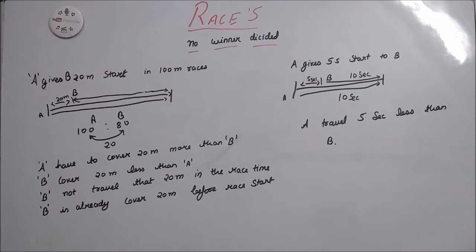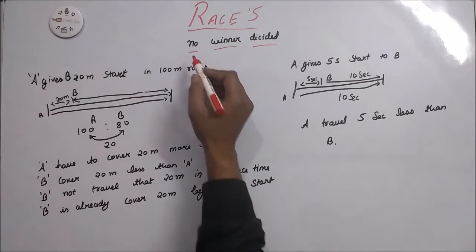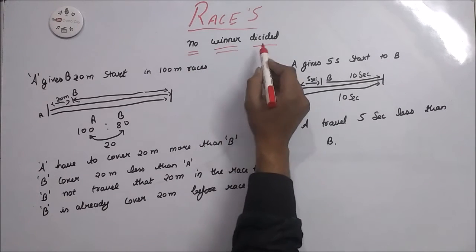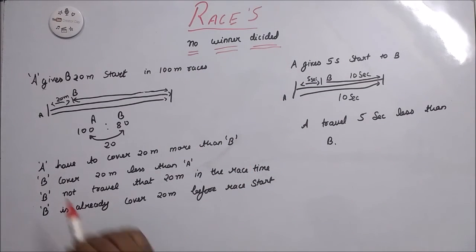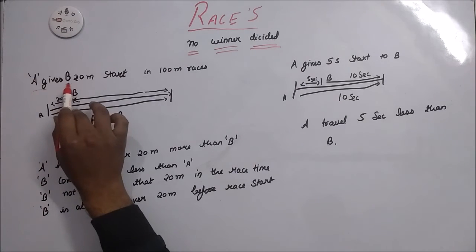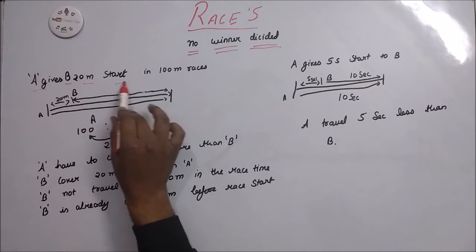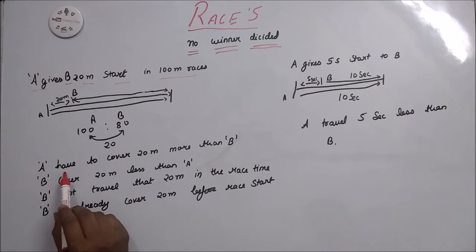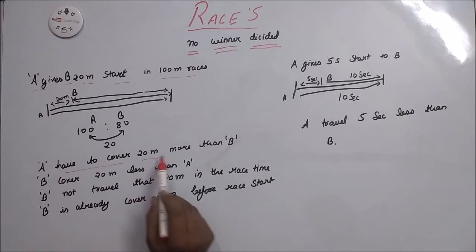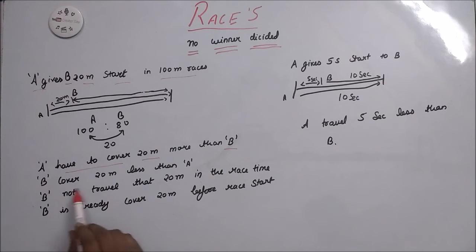Now here is the concept for no winner decided. A gives B 20m start in a 100m race. That means A has to cover 20m more than B. B covers 20m less than A. B did not travel 20m in the race time. B has already covered 20m before the race started.